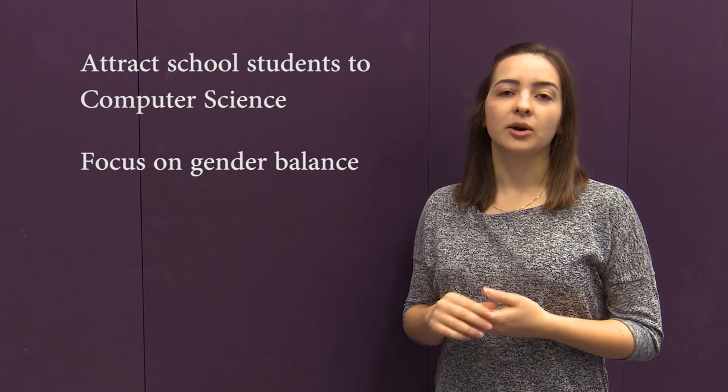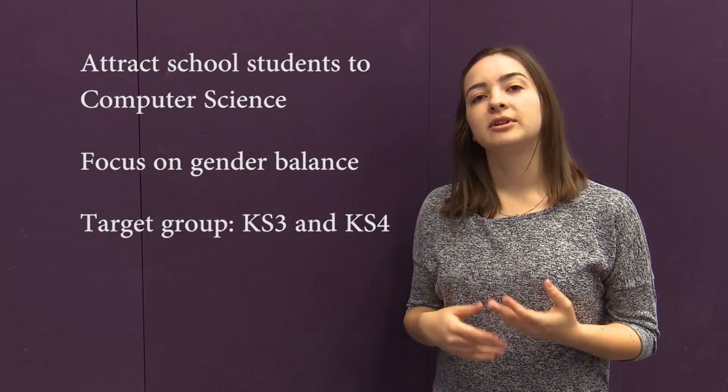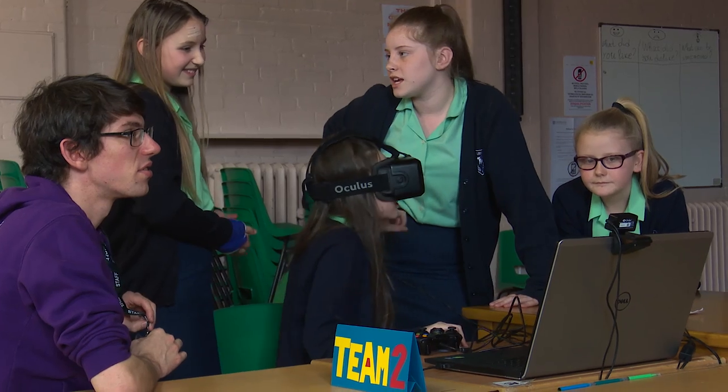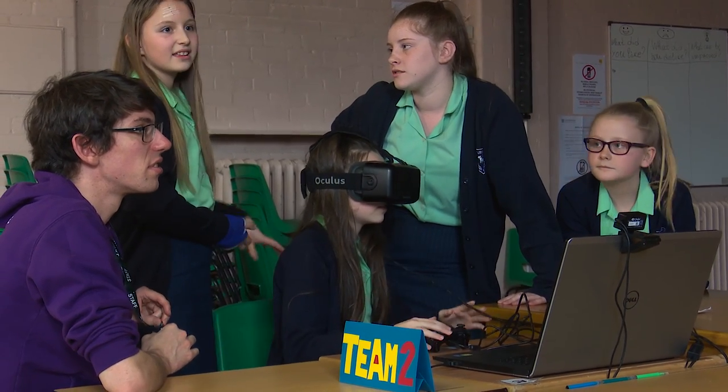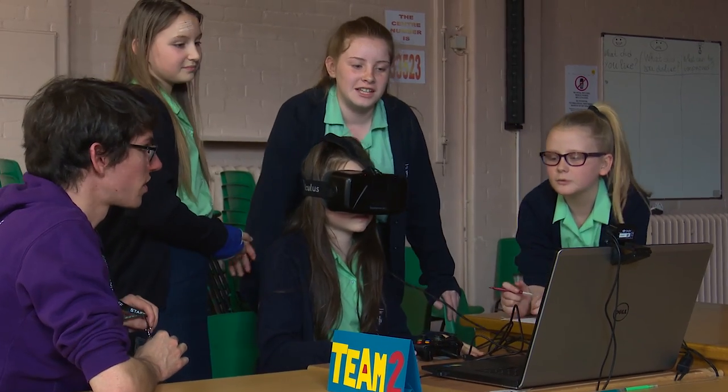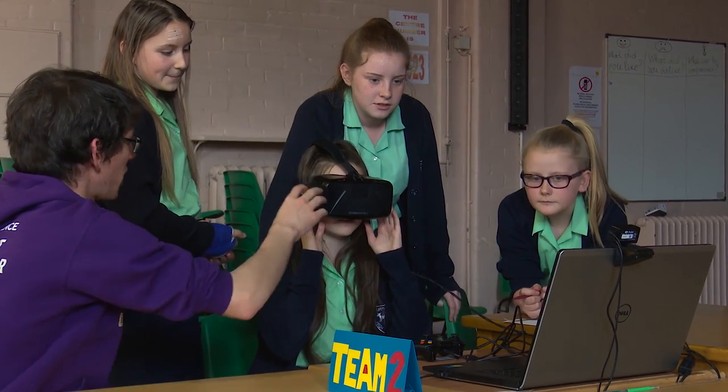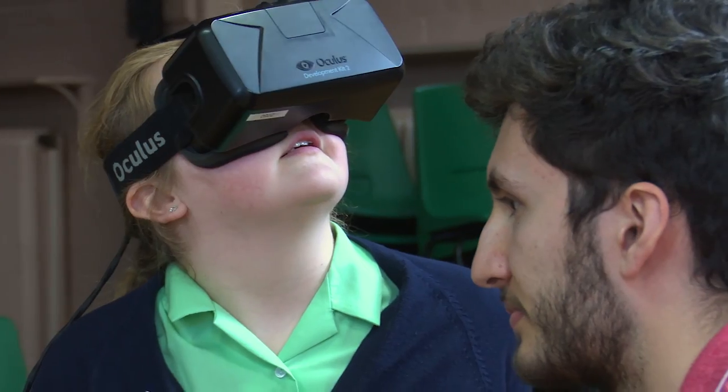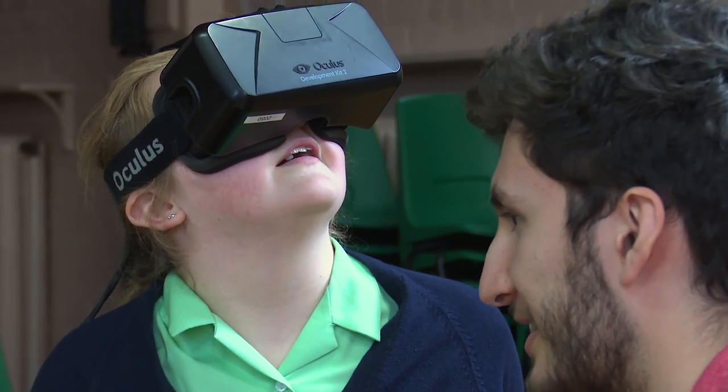This is a final year project at the University of Manchester. It is part of the school outreach projects that the university is offering to local schools. The main aims of the project are to attract school children to computer science and to focus on gender balance. The target audience is school children in key stages 3 and 4. The project consists of a virtual reality game, a flexible workshop to deliver the game, and supporting materials that can be reused by university staff and school teachers to deliver this workshop.